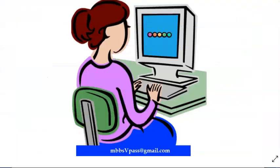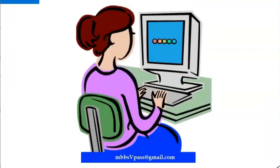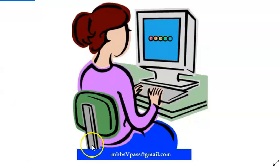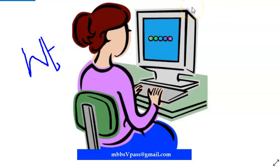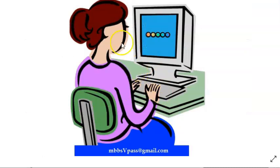Also remember the preventive treatment (TPT): isoniazid and rifapentine. All these drugs have specific conditions of use — weight bands, dosing by weight, pediatric dosing, pregnancy considerations, etc. Importantly, the injectable regimen is being phased out; the focus now is entirely on oral regimens.